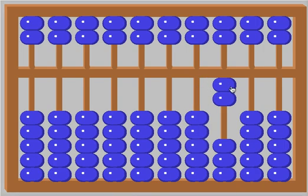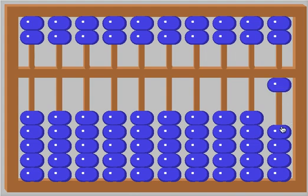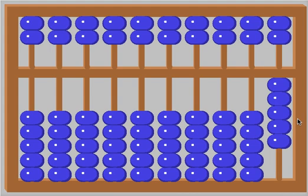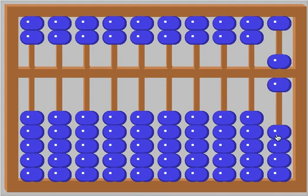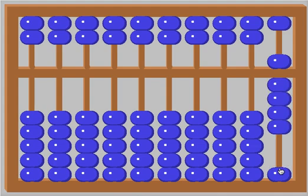Let's reset this. Let's count. Ready? 1, 2, 3, 4, 5. This is nothing new for you. Trade for 5. 5, 5, 5, 6, 7, 8, 9, 10.